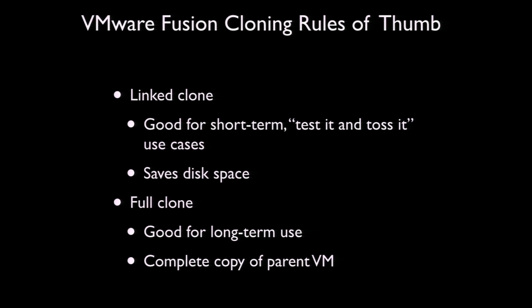When using clones in Fusion, I have a couple of rules of thumb. I do a lot of testing where I'm using a particular clone once or twice for a specific purpose and then tossing it. In that case, using a linked clone makes a lot of sense because it saves space and I don't have to worry about keeping it around long term. If I'm planning for a clone to stay around for a while, I make a full clone — that way I don't have to worry about keeping track of the clone's parent VM, since the full clone is a fully self-contained copy.